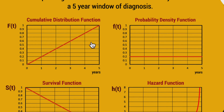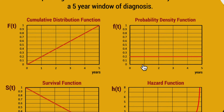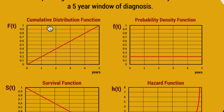The probability density function is actually the gradient of the cumulative distribution function. Because this is a simplified example, we have a constant gradient, so the probability density function is in fact uniform. To find the proportion of people dying within say one, two, or three years, we find the area under this curve. The area from zero to one is 0.2, and from zero to three is 0.6 — meaning 60% of people have died within three years. The area under the PDF must sum to one, for the same reason the CDF finishes at a y-value of one.